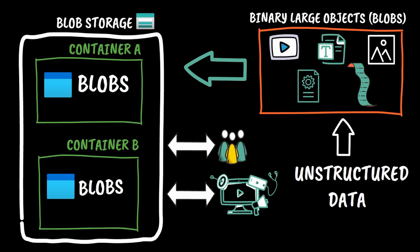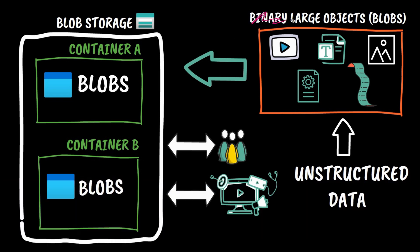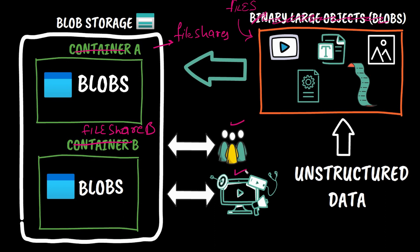Azure file storage is similar to blob storage, but instead of blobs we have files, and instead of containers we have file shares. The other difference is how the files are accessed by the application and by the user. In blob storage it was accessed over HTTP or HTTPS, whereas in Azure file storage it is accessed over NFS or SMB protocol.